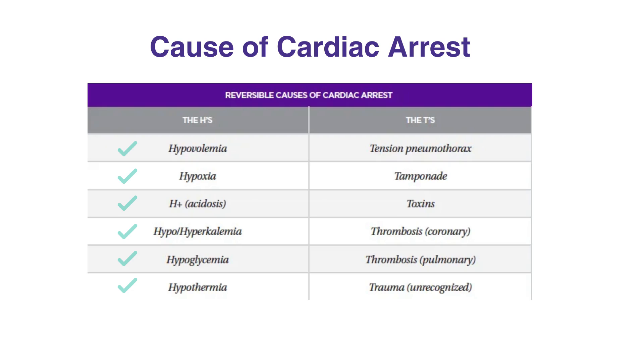The T's include tension pneumothorax, tamponade, toxins, coronary thrombosis, pulmonary thrombosis, and unrecognized trauma.